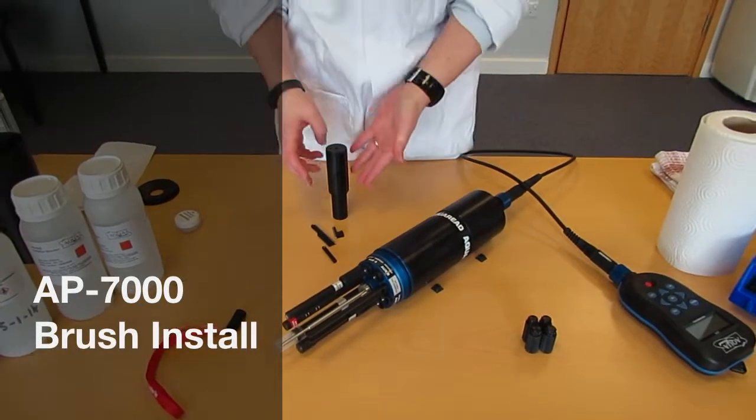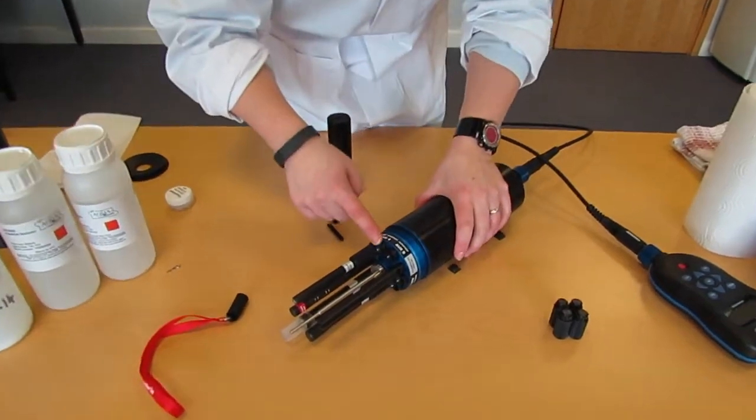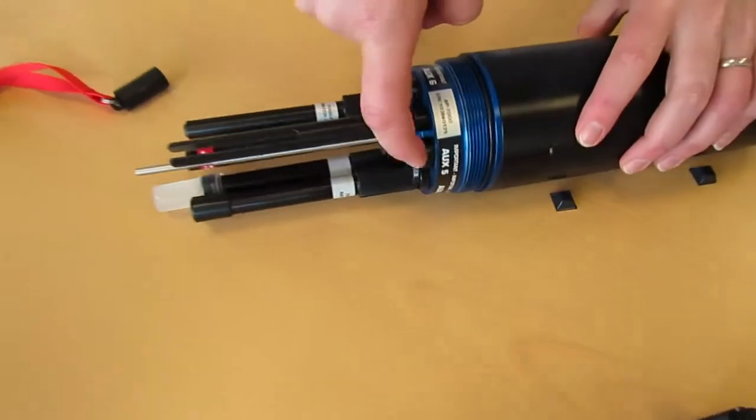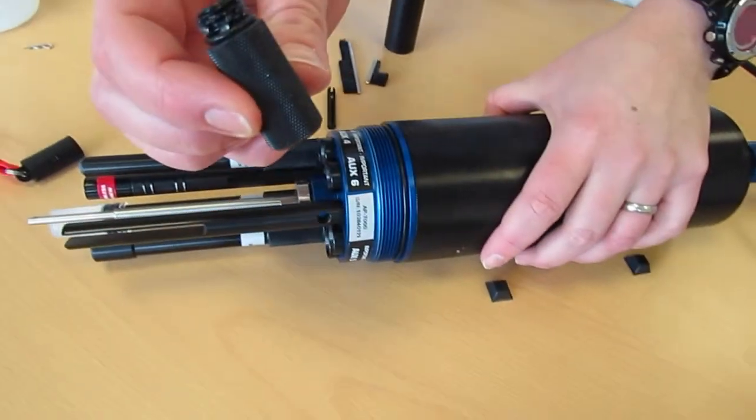So next I'm going to show you installation of the wiper arm. Now first of all, if we're not using these extra AUX electrode sockets, we need to plug them up with these plugs.